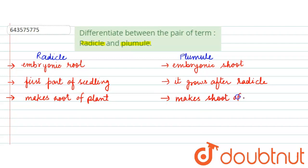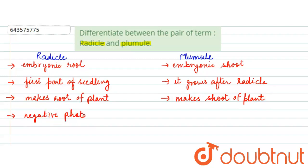Proceeding towards the fourth point: your radicle is negatively phototropic, which means it moves away from sunlight. Talking about the plumule, it is positively phototropic, so it will move towards the sunlight.